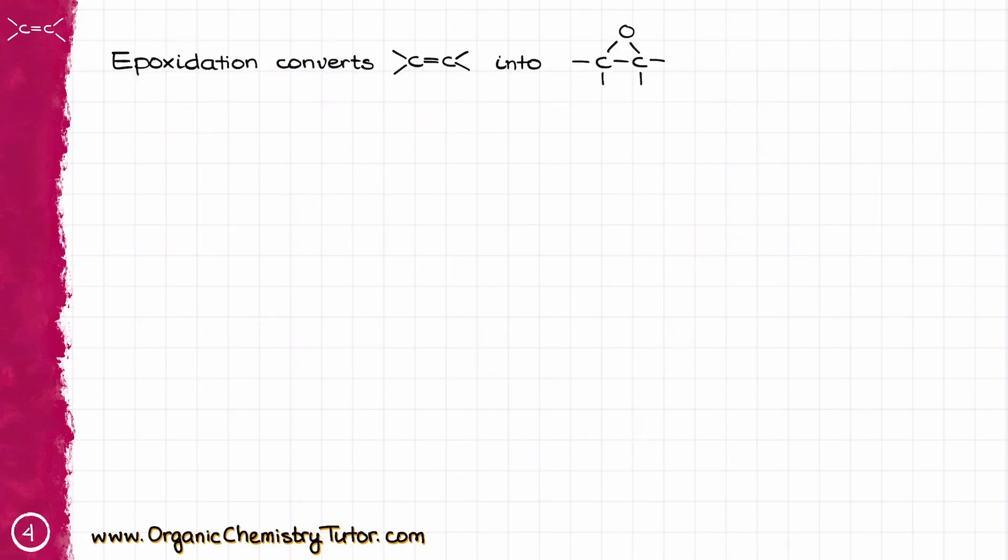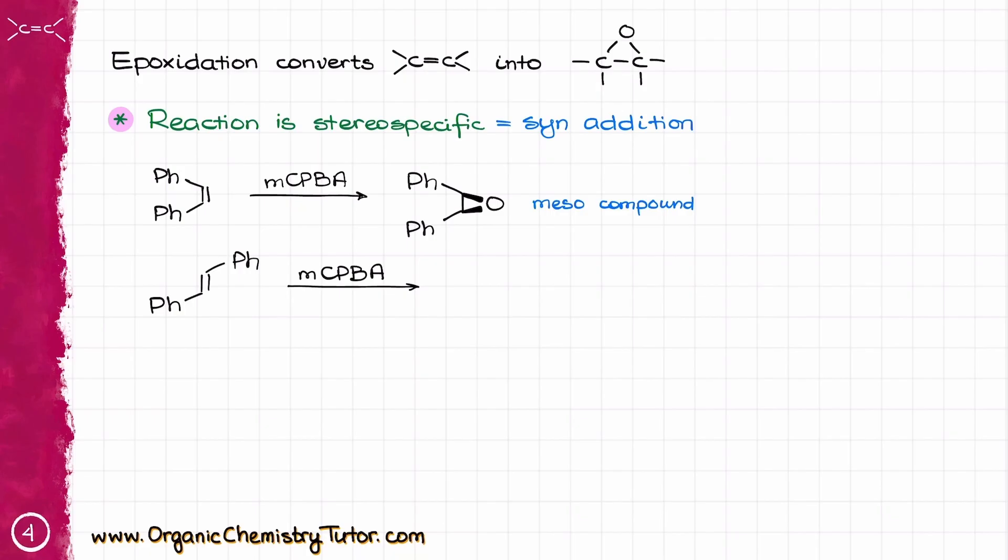So to recap what we have just learned, the epoxidation converts alkenes into the corresponding epoxides. This reaction is stereospecific, and you can classify that as a syn addition. Thus, the stereoconfiguration of the original double bond does matter a lot. And in fact, if I react a cis alkene like this, I'll get one product, a meso compound in this case. But if I were to react a trans alkene like this trans-stilbene, for instance, I'm going to end up with a pair of enantiomers.